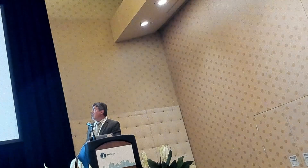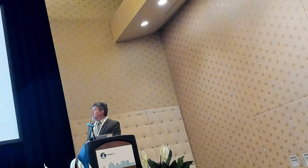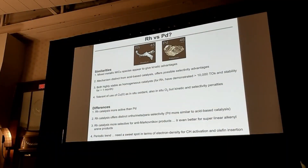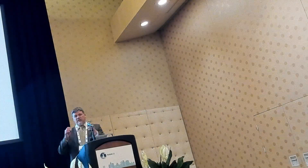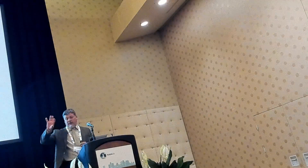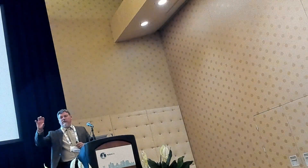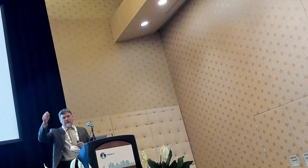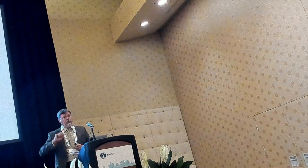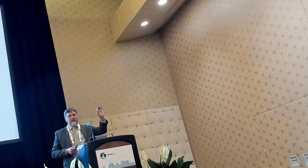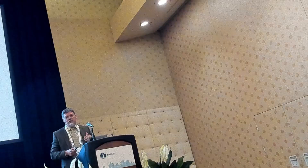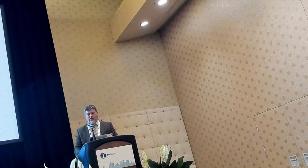What are the differences? Rhodium is more active than palladium. It offers distinct ortho/meta/para selectivity — more rigorous than palladium. It's more selective for anti-Markovnikov products. And there's a periodic trend here, we think — there's a sweet spot in terms of electron density. If you go too late in the periodic table, it's too electrophilic, too acidic, and more acid-like. If you go too far left in the periodic table, the metal is too electron-dense and shuts down things like olefin insertion chemistry.